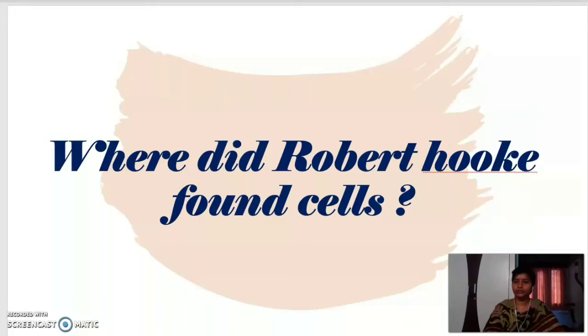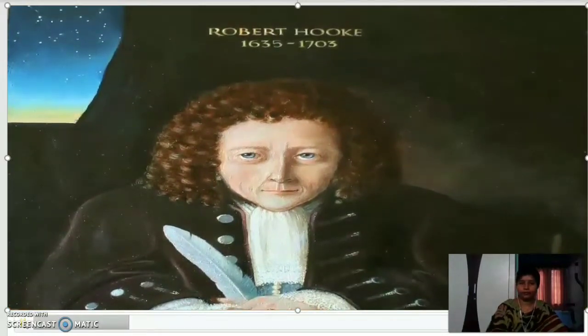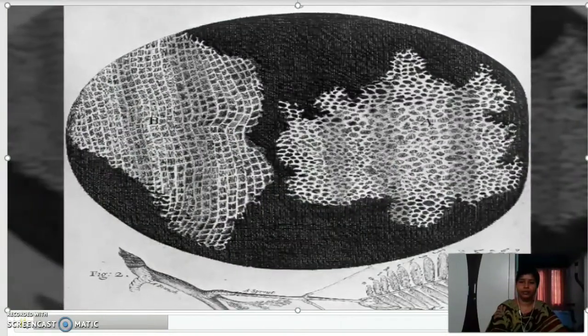Robert Hooke first observed cells in the cork of an oak tree. I want to show you how the cells looked to him with the help of a video. Robert Hooke found cells in the cork of the oak tree — those cells looked like honeycomb-like structures. He named those structures 'little rooms,' and later they were called cells. This is the microscope used by Robert Hooke.